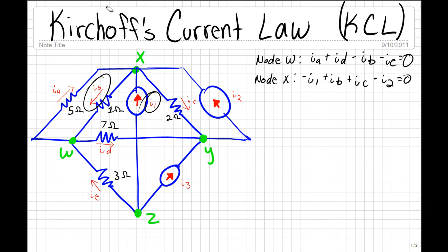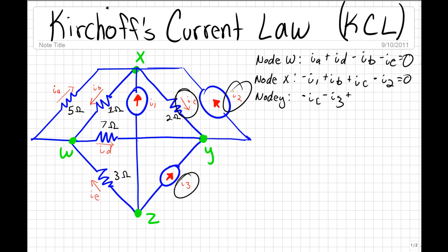Now for node Y: current IC is entering node Y, so it's going to have a negative sign. Current I3 is also entering node Y, so it's also going to have a negative sign. And current I2 is leaving node Y, so it has a positive sign. And ID is entering node Y, so it's going to have a negative sign: minus ID.